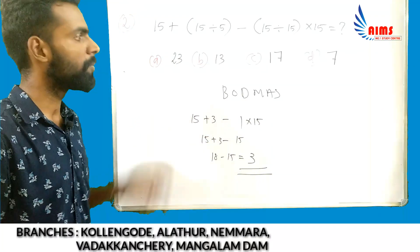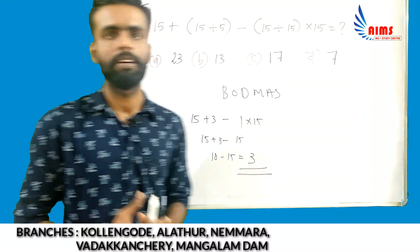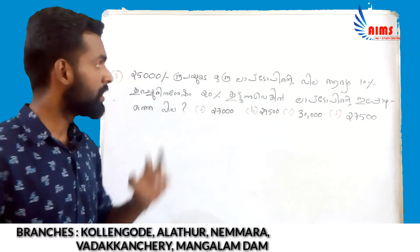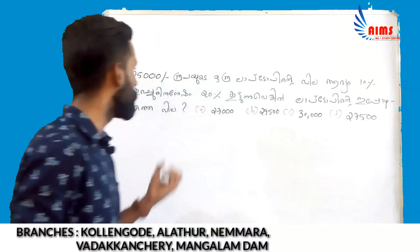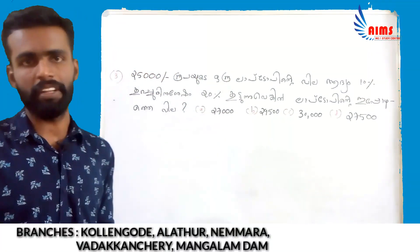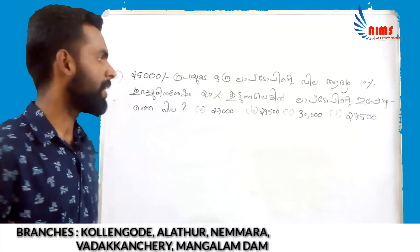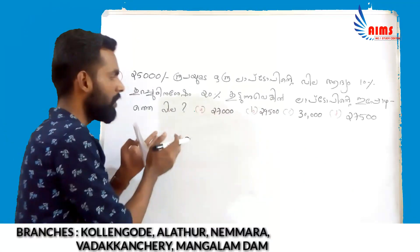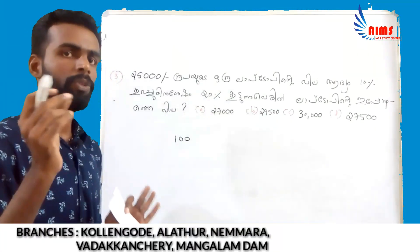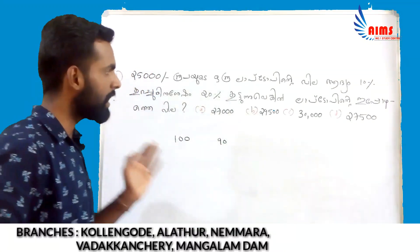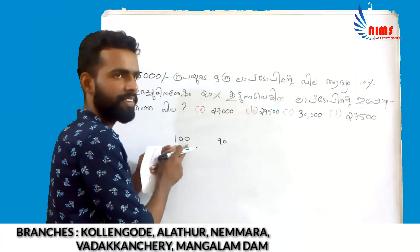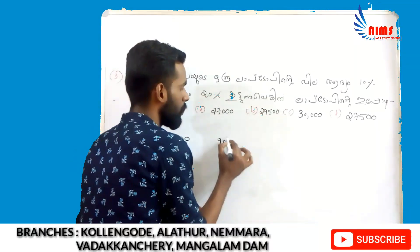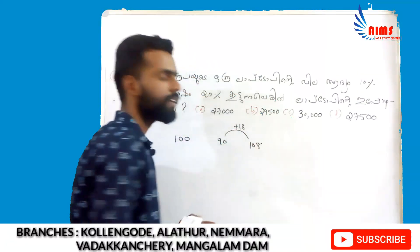Moving on to the next question about percentages. If we consider 100 and add 100, we write it in terms of 10. Adding 100 to 0 gives 20. We find 90 leads to 20, written as 18, then 10 plus 18 is 18. So 8% of the total concept gives us the required value.